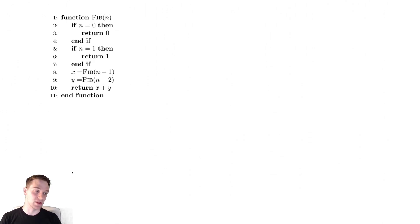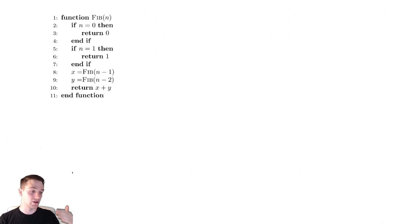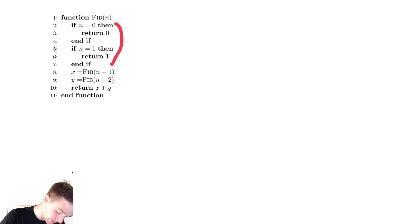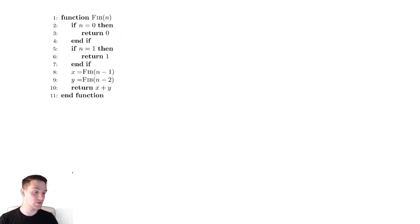We have the classic implementation here. For this implementation, we have two base cases: we return 0 when n is 0, or we return 1 when n is 1, so both base cases appear up here. We then make two recursive calls, one with size n minus 1 and one with size n minus 2, and return their sum.